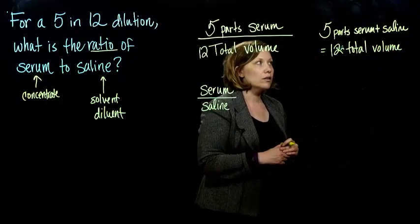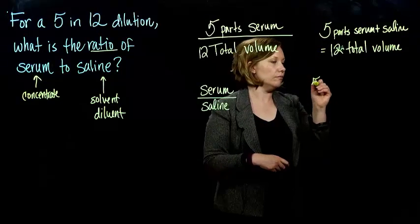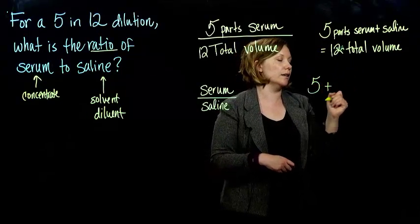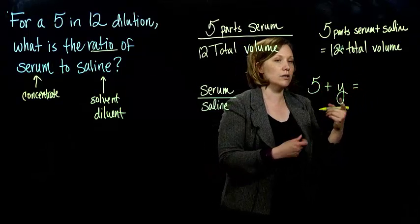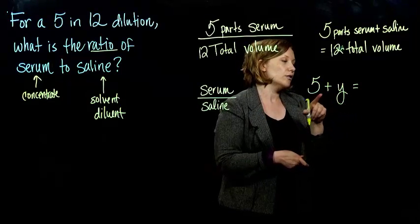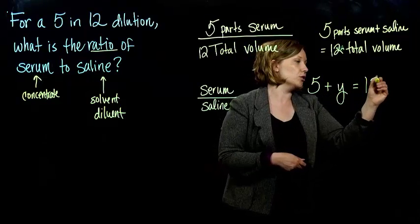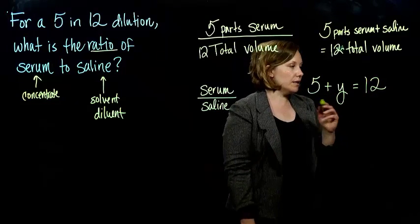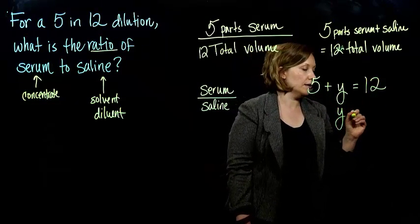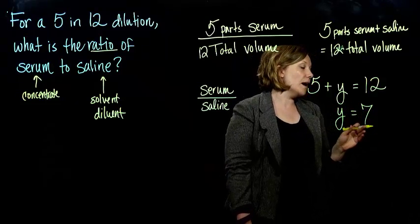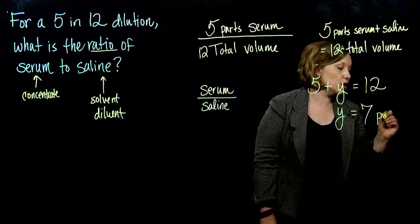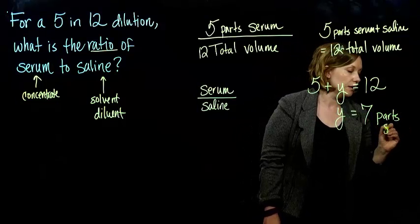So, okay, so I'm going to call my saline Y, but you could leave it as saline. So 5 plus Y should give me 12. That means if I subtract 5 from both sides, the amount of saline I have, I should have 7 parts saline.